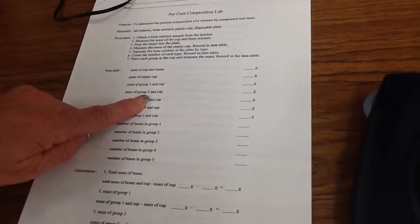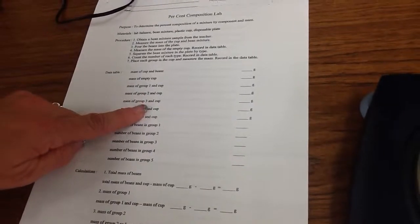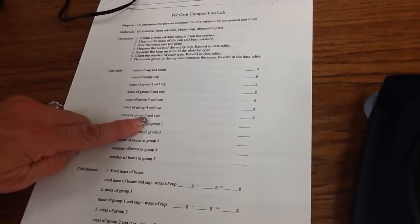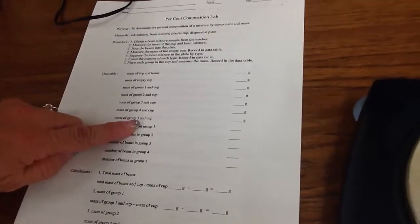Mass of group two, it doesn't matter. Give it a name. Yellow beans, pinto beans, black beans, and white beans. Just give them a name and weigh all of them together.